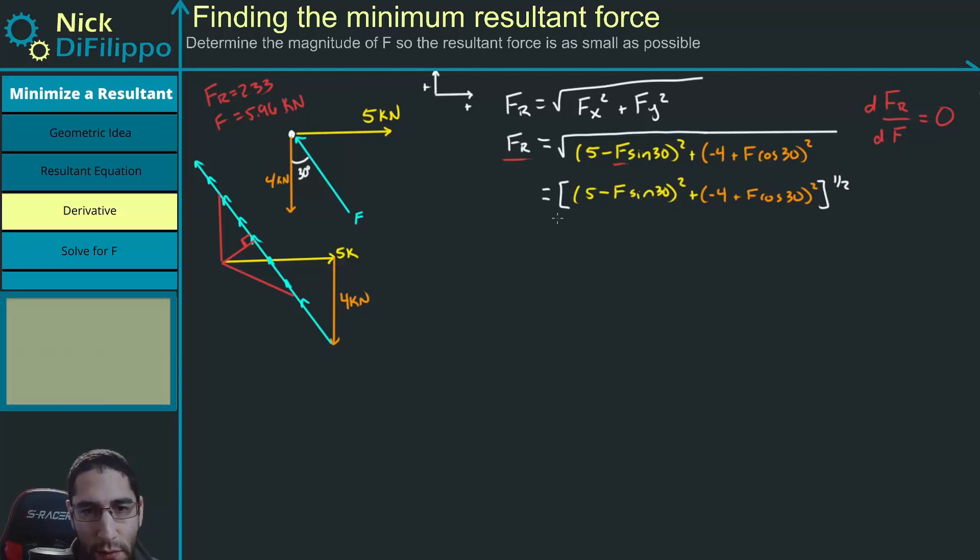So now I need to go and I need to square both these terms. And I'm going to leave that side off for right now. So this is going to be 25 minus 10F sine of 30 plus F squared sine squared 30.